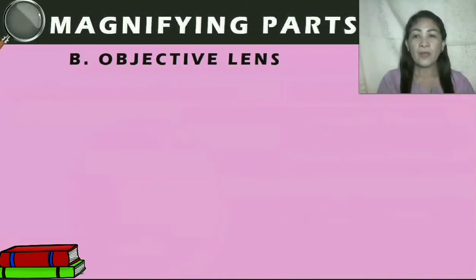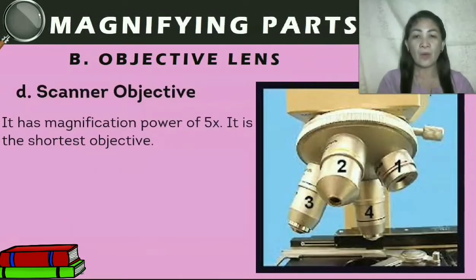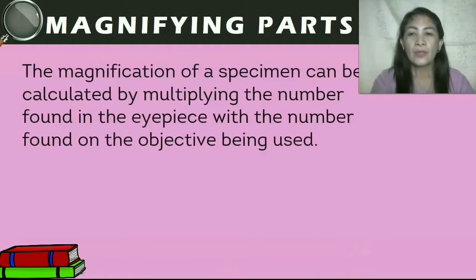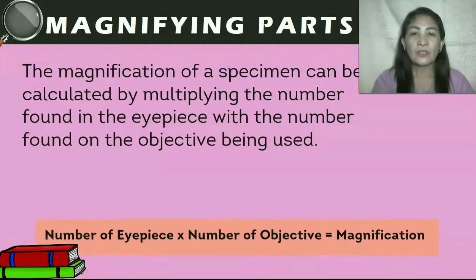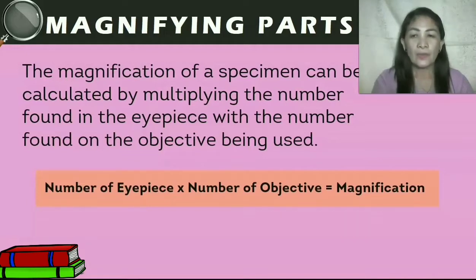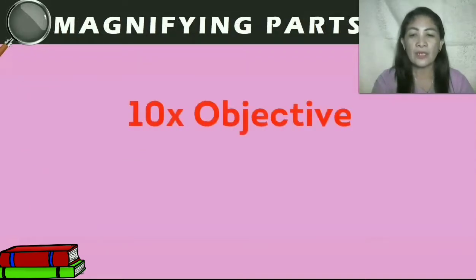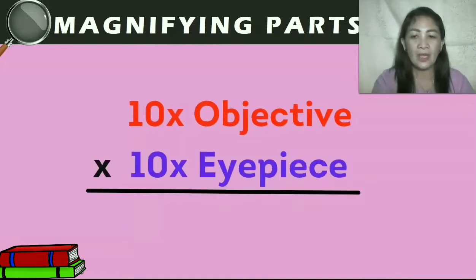Some microscopes have a scanner objective with a magnification power of 5 times — it is the shortest objective. Remember, the magnification of a specimen can be calculated by multiplying the number found in the eyepiece with the number found in the objective being used. So if the specimen is viewed using the 10 times objective and a 10 times eyepiece, it will be magnified 100 times.